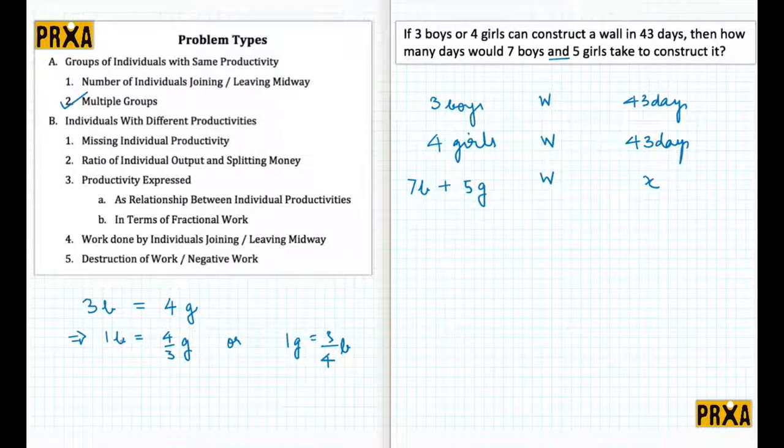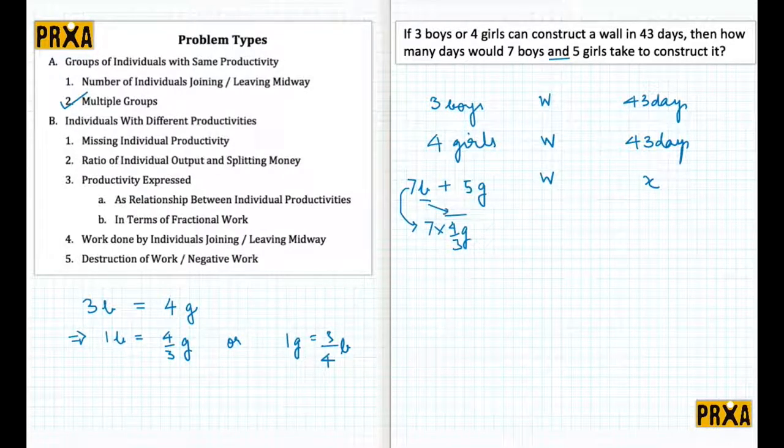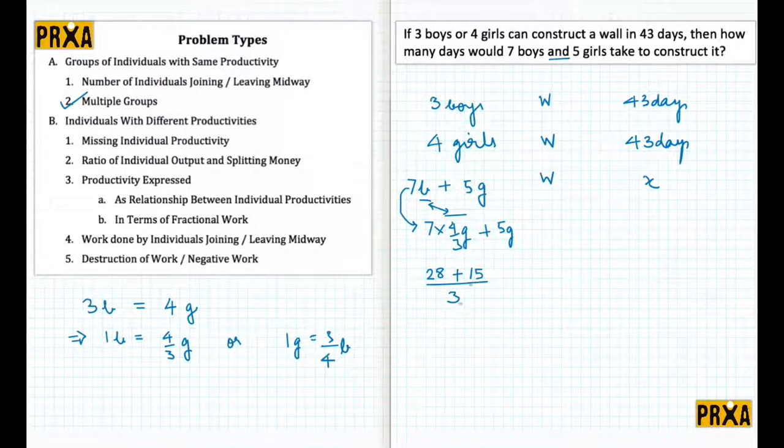From the relationship that I've arrived at here, I can either replace one boy with four by three girls, or I can replace one girl with three by four boys. So let me just replace boys with four by three girls. So the question actually is how much time would seven times four by three girls plus five girls take to build the wall. So what I get here is 28 upon 3, and I got 15 upon 3, so this is 43 upon 3 girls.